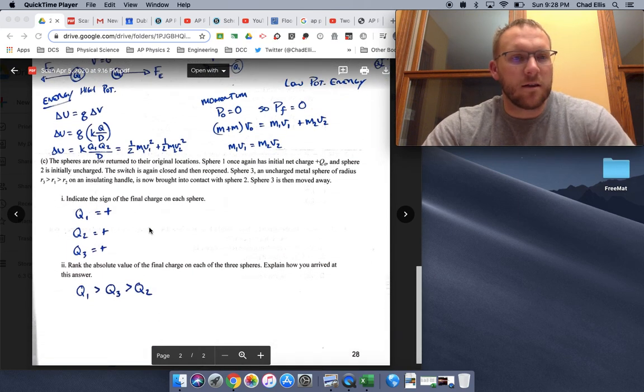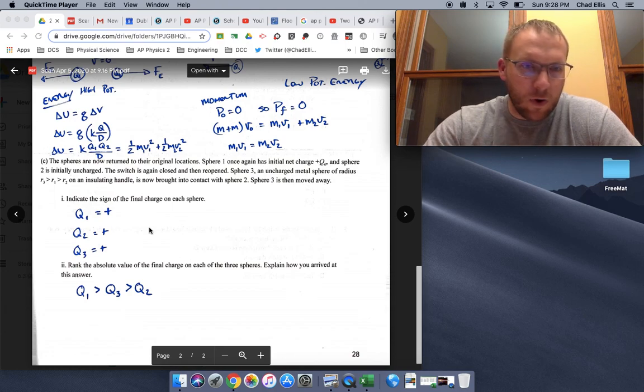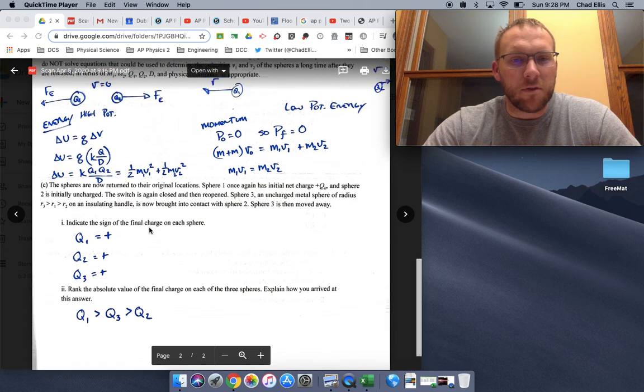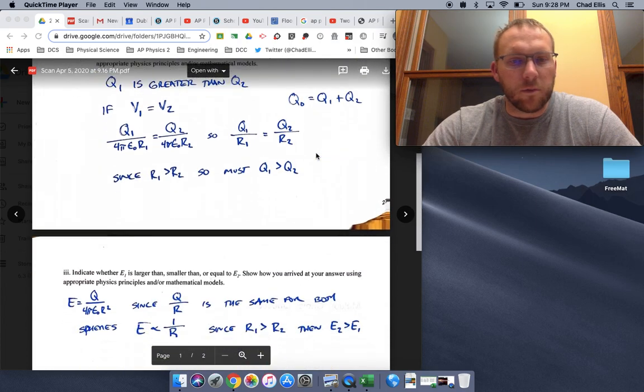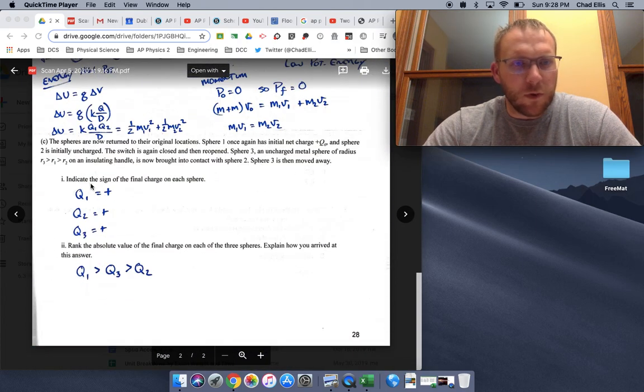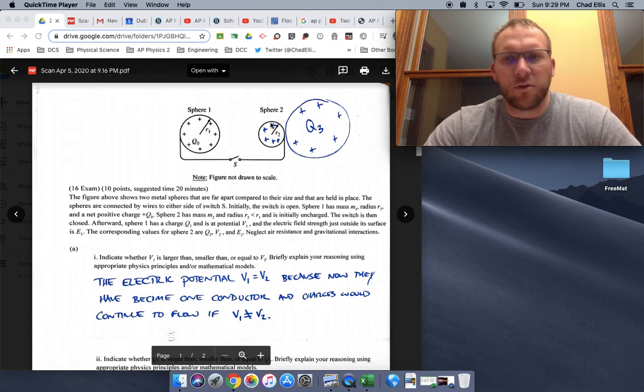The last thing then part C asks for how the spheres are now returned to their original locations. We're going to charge and then connect the wire, disconnect it again. And then we're going to bring some sphere three. So that's kind of why you have this sphere three, which is much larger than R one and R two. So initially what are their signs? So essentially what we have, again, there's no induction. This is how I'm interpreting it. Basically everything's going to be positive.